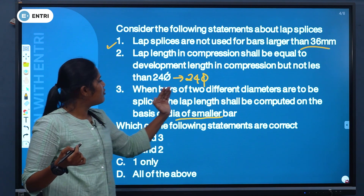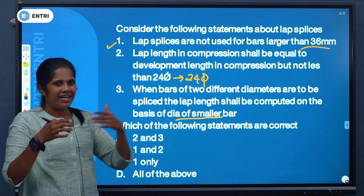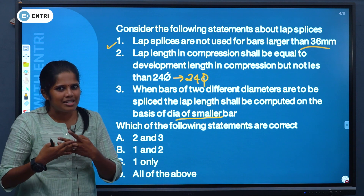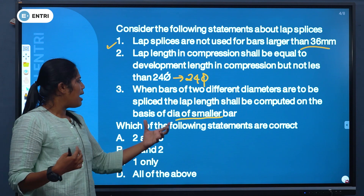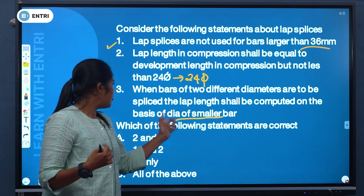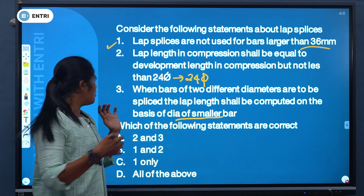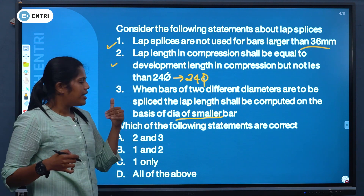Third: when bars of two different diameters are to be spliced, the lap length should be computed on the basis of the diameter of the smaller bar — that's also correct.